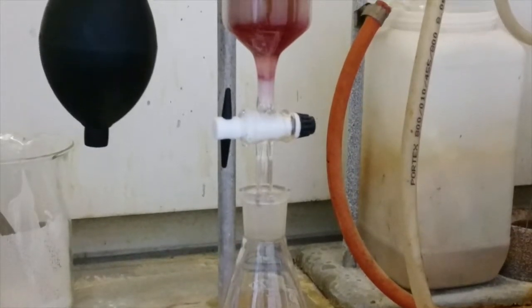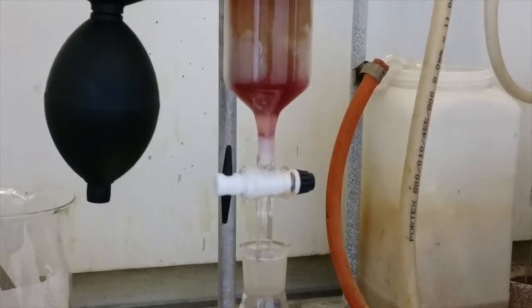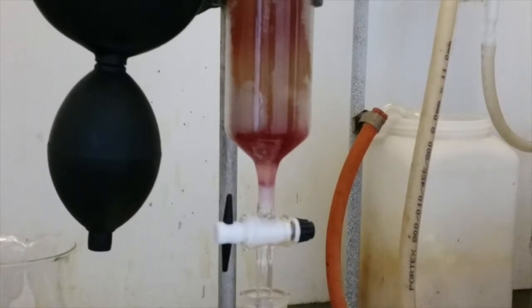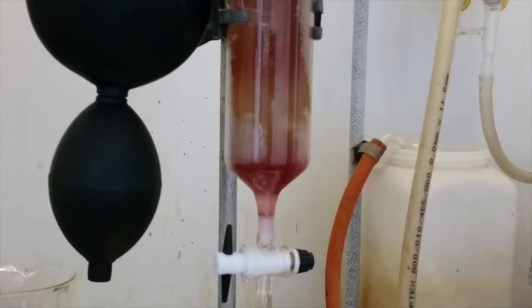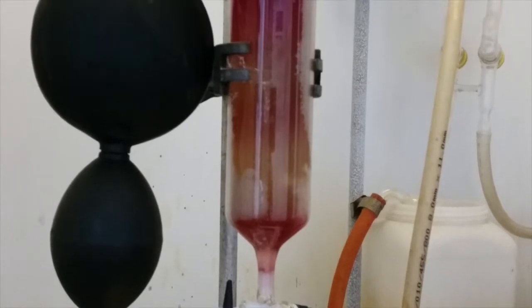You can see the product we were trying to collect is completely eluted from the column. At this point we don't need to add any more solvent and can dry the silica out. It can then be disposed of safely and appropriately at a later date.